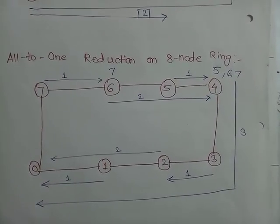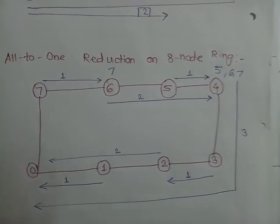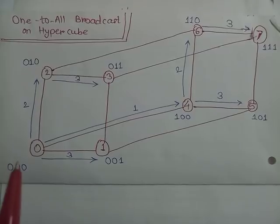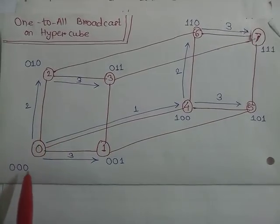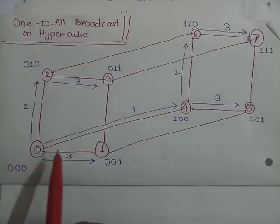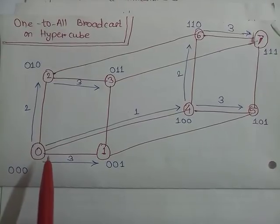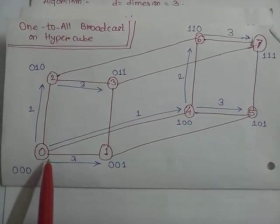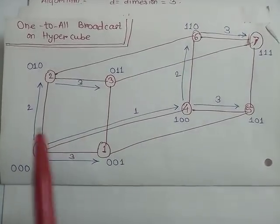So that is called all-to-one reduction on 8-node ring. Now we will come to hypercube. In hypercube, it is 3-dimensional structure. So we have to see one-to-all broadcast on hypercube. Now there are 8 nodes in hypercube, whereby 0th node is having message M and that needs to be transferred to all other nodes.